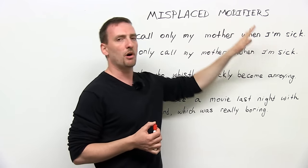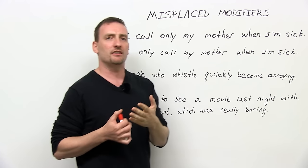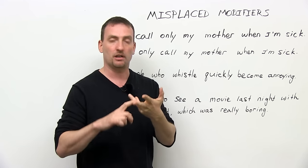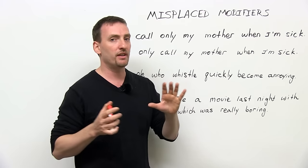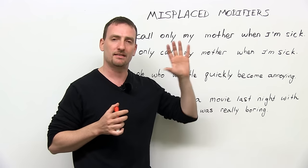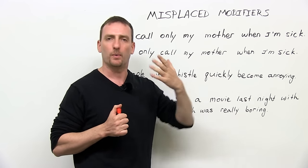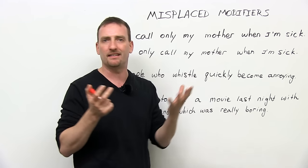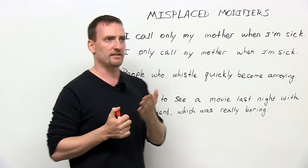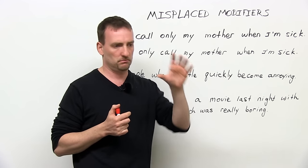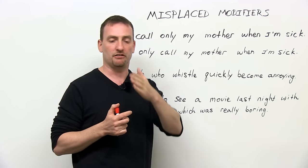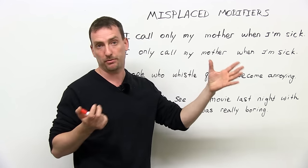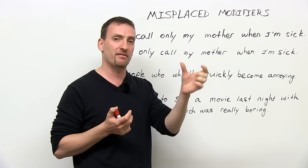So first of all, what is a modifier? A modifier is anything in a sentence — it could be an adjective or an adverb, a clause, a phrase — anything that modifies something else in the sentence. What does modify mean? It means to change, change the meaning of, change the idea of. So for example, if you say 'a car,' you have an idea of a car. If you say 'a red car,' you have a different idea of the car. So 'red' modifies 'car.'